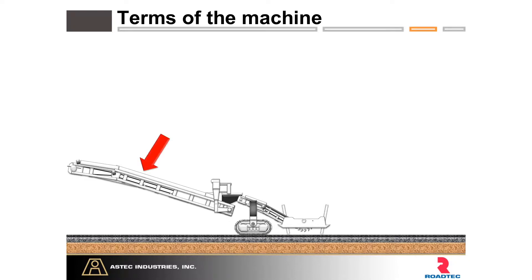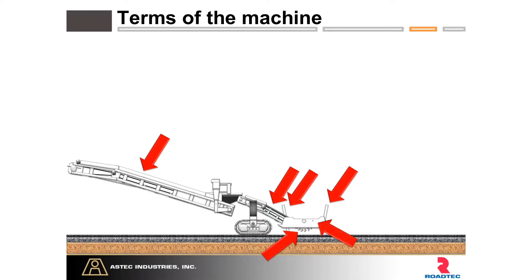First, the secondary conveyor — that's the conveyor that discharges material out onto the dump truck. Your primary conveyor unloads material from the cutter housing and moves it to the secondary conveyor. That would be the cutter drum. Then we have our front and rear moldboards, and those are our end gates — on the immediate left and right-hand side of the cutter drum.